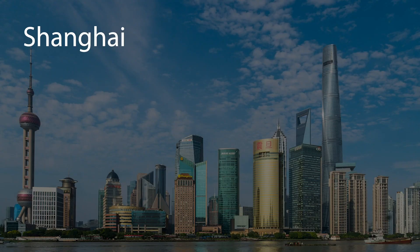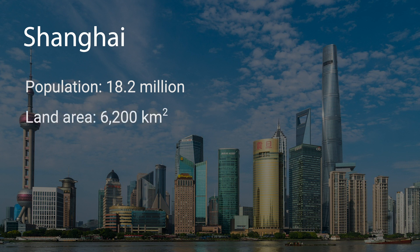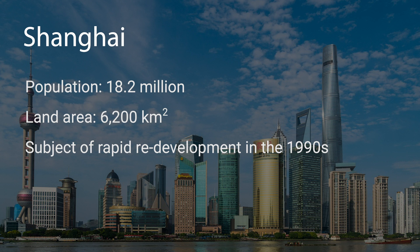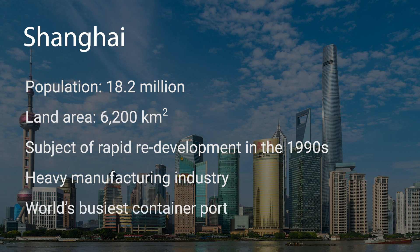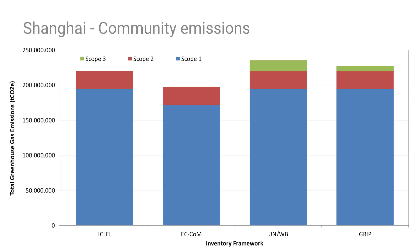Let's take a look at Shanghai. Shanghai is located on the eastern coast of China and is the most populous city in China, with a population of 18.2 million on a land area of 6,200 square kilometers. It used to be a fishing and textiles town and is now the showpiece of the Chinese economy, with a heavy manufacturing industry, very limited agricultural industry, and is known as the world's busiest container port. The inventory ranges anywhere between 193 megatons and 235 megatons depending on which of the four applicable inventories is used. Scope one varies a little, scope two is fairly consistent, and scope three — the wider indirect emissions — is accounted for in only two of the four inventories, which explains that significant range.